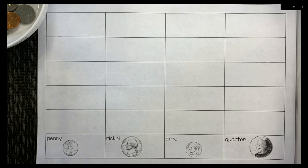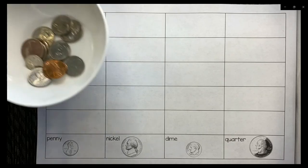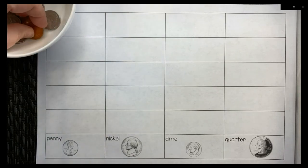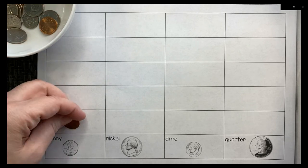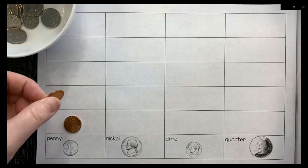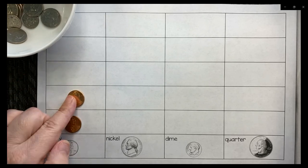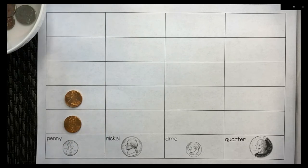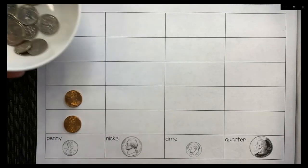So whenever we graph, we're going to take something from the bucket here. I'm going to take a penny. And I always start at the bottom and start working my way up the column in the graph. So I have my pennies. There's my bowl. My pennies are done.